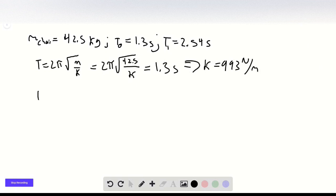We can then solve for the mass of the person sitting in the chair by plugging this k in and using our T₁ of 2.54 seconds.